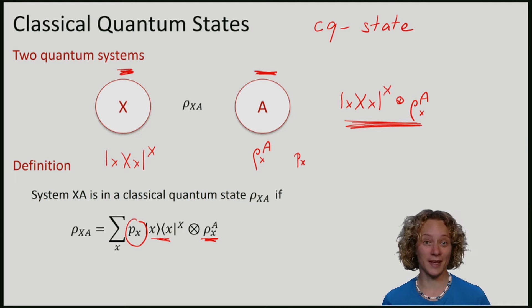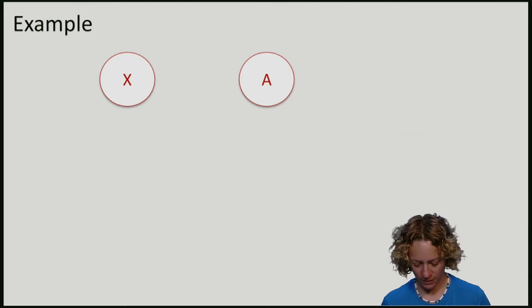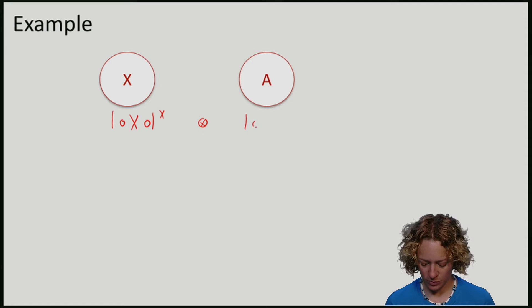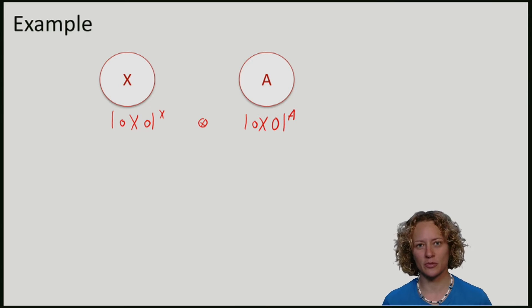Let's consider an example of this. Let's imagine I prepare the state of X in 0 and my state on A will actually also be 0. And I do that with probability half.